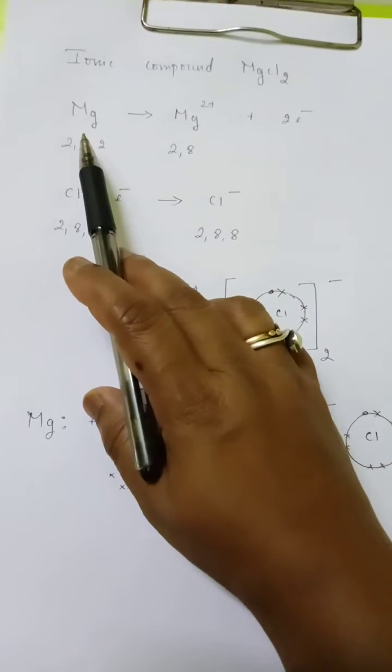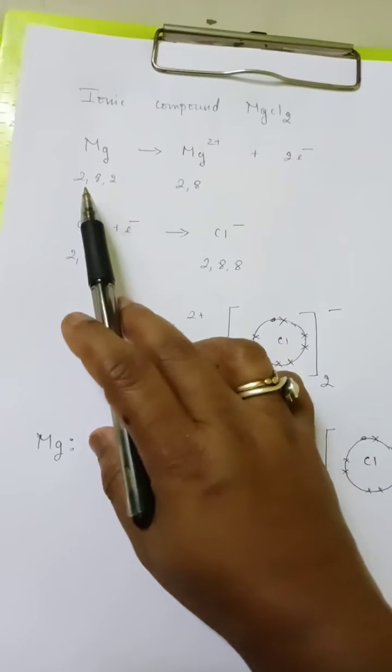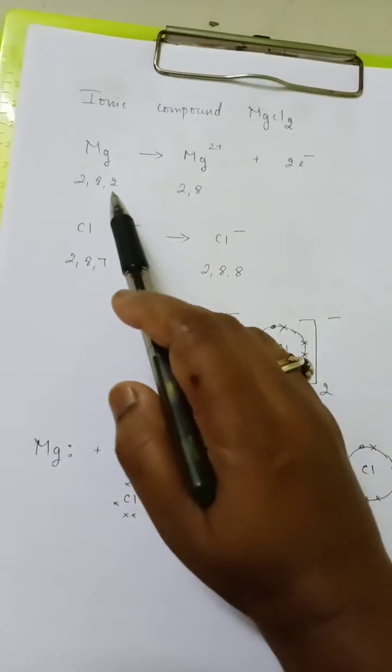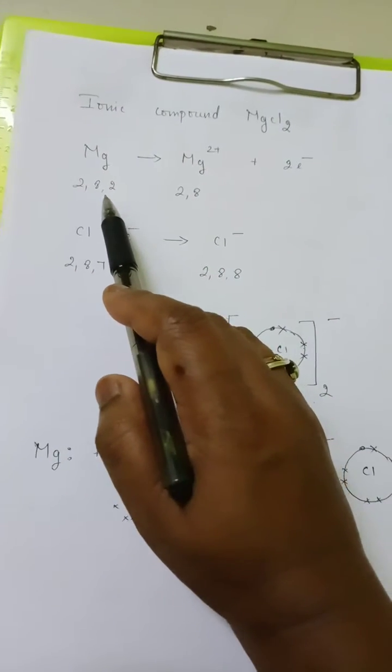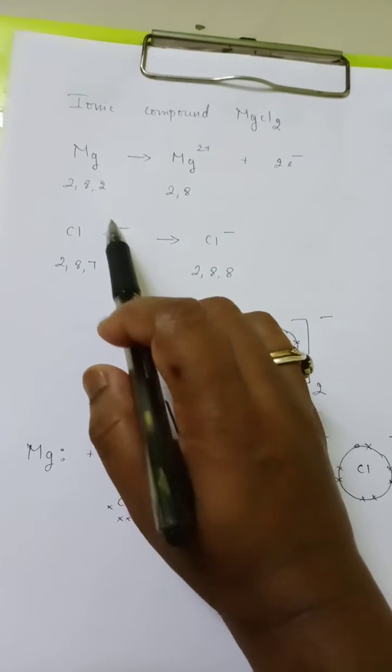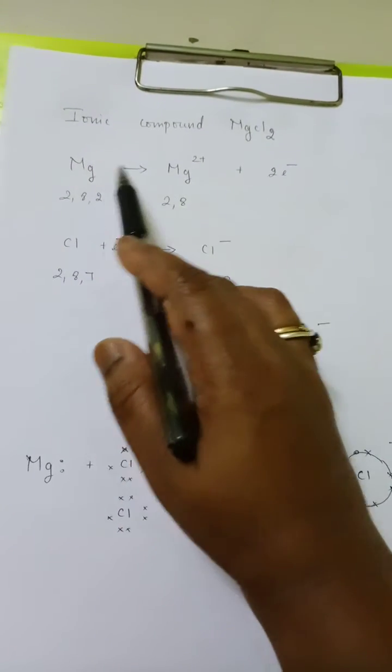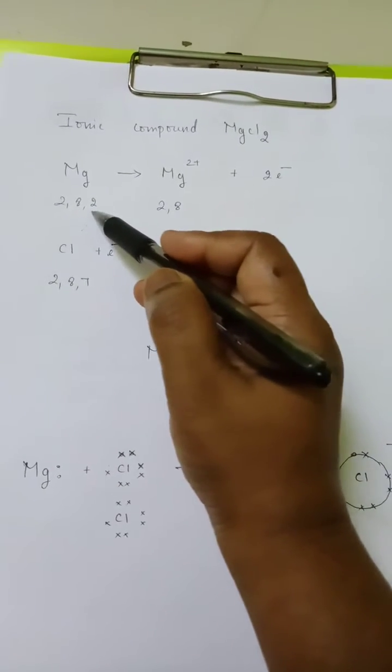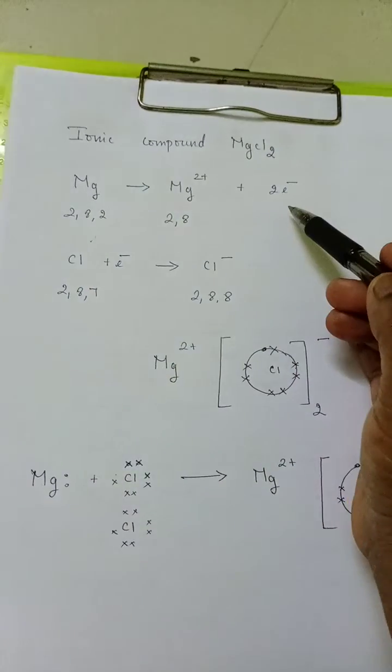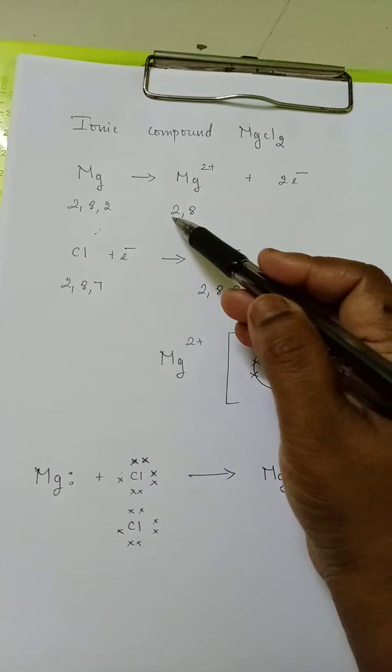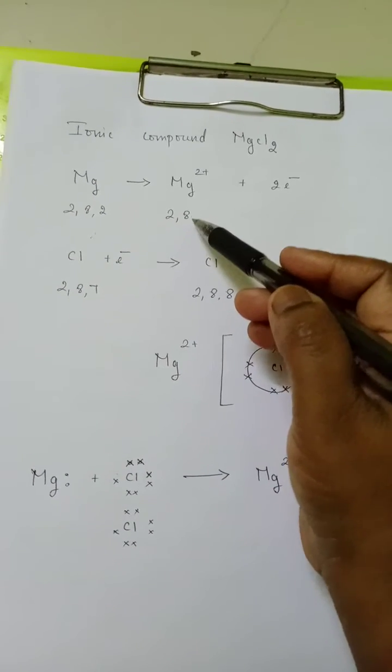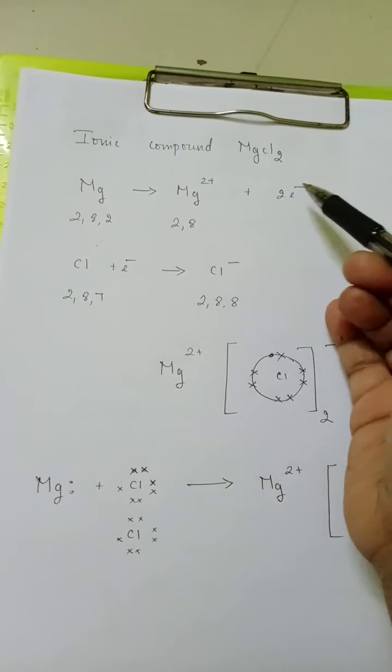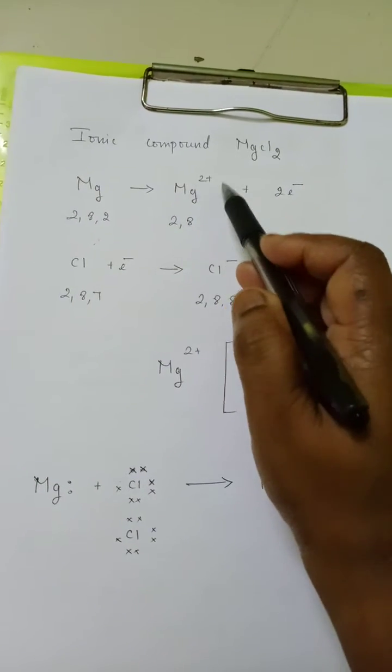So over here, magnesium's electronic configuration is 2,8,2 because it's a second group element. Two electrons are in the outer shell, and when it donates electrons, it can donate these two electrons. By donating two electrons, this becomes 2,8. That is why it donates electrons, donates its negative charge, so that means 2+.